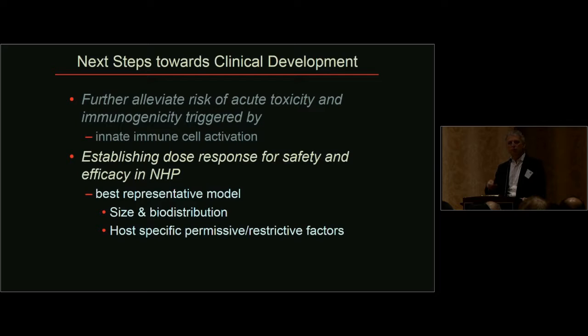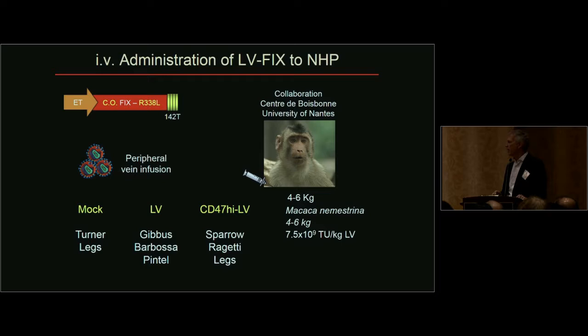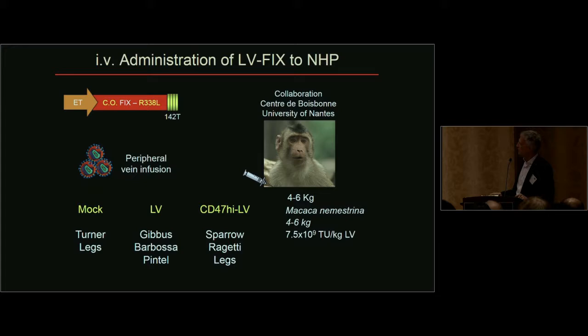The key question was whether these predictions hold up in a more relevant model such as non-human primates, and whether we see a substantial benefit of these changes. At the same time, we can interrogate a more relevant model in terms of cross-reaction with human proteins. We moved eventually to a primate study — quite challenging in terms of the amount of vector to be produced, the cost of the studies, and quality of the vector. We performed the study in France, using a non-restrictive monkey strain which should allow good transduction by HIV-derived vectors.